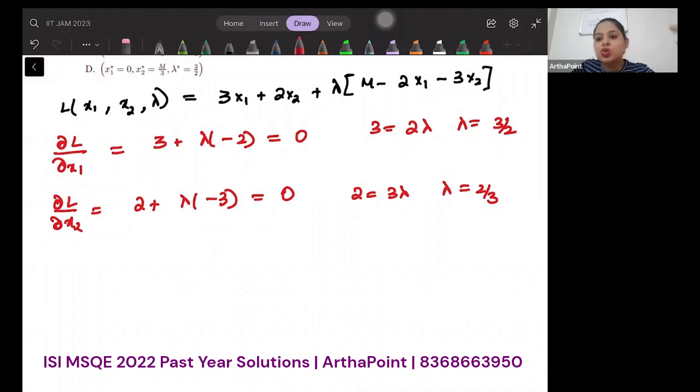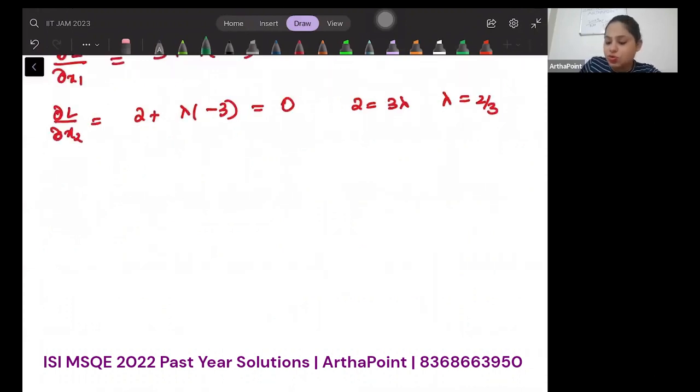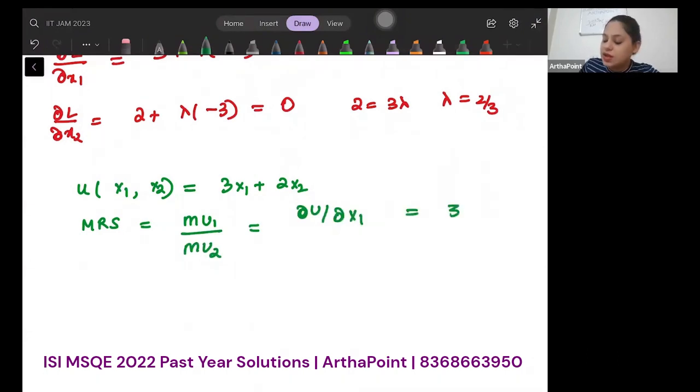I will use the usual method we have been following. I'm given a substitute good utility function u(x1, x2) = 3x1 plus 2x2. To find the MRS, it will be mu1 by mu2. Differentiating the utility function with respect to x1 gives 3. Differentiating with respect to x2 gives 2.